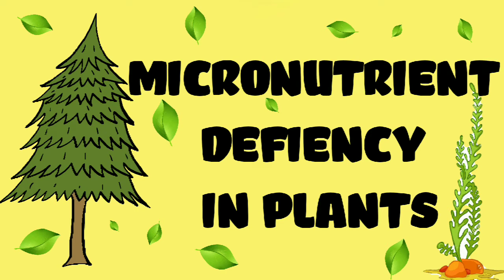Hello everyone, welcome to BioOcean. This is Sheetal Maria, and today's topic is about micronutrient deficiencies in plants. Micronutrients are substances which a plant essentially requires for its growth, and the amount required is very minimal. Whenever this minimal threshold level of micronutrients drops in a plant, it will tend to develop certain diseases and associated symptoms, and later it will lead to death.